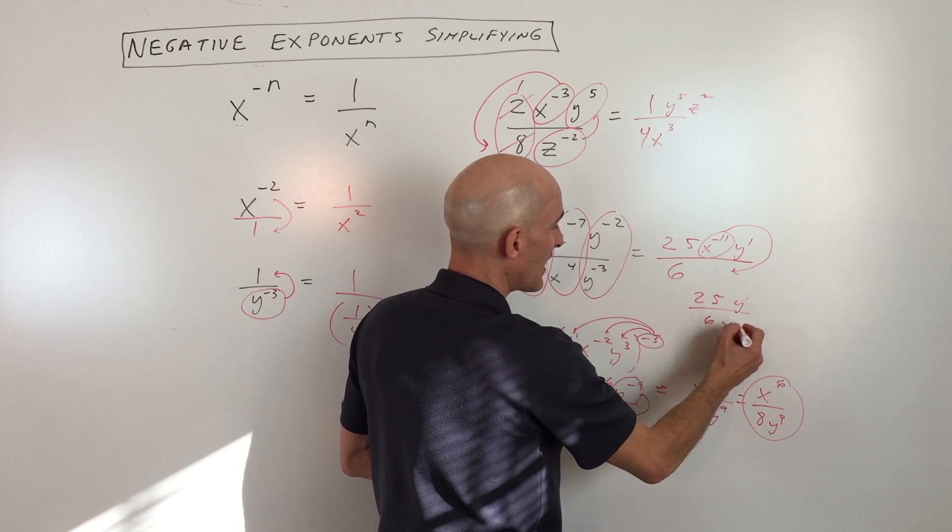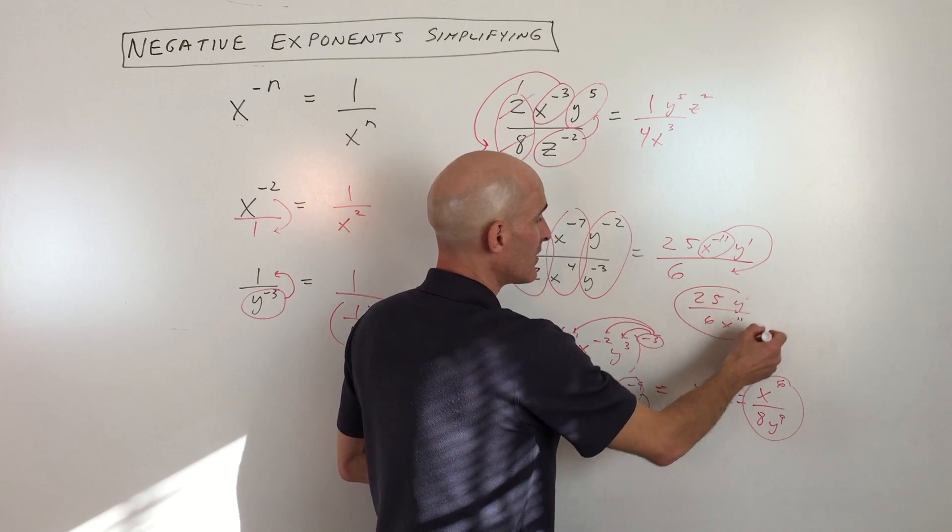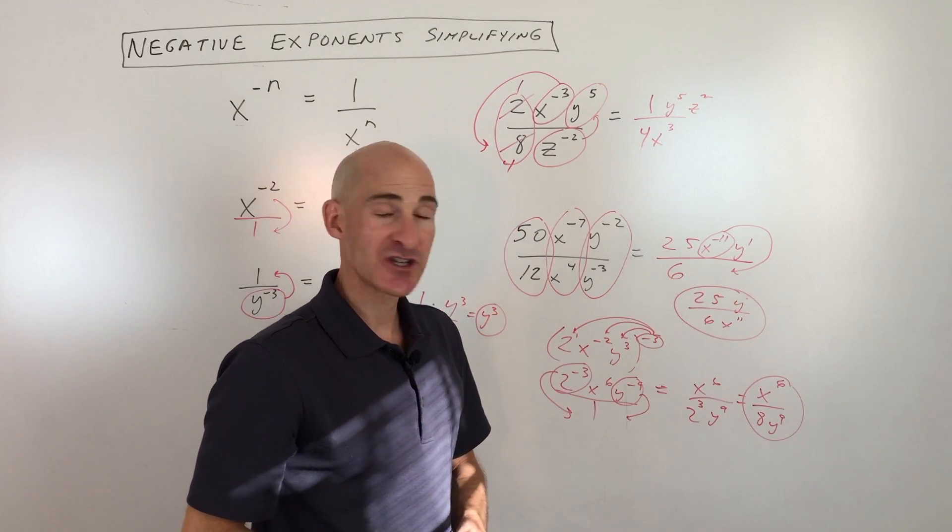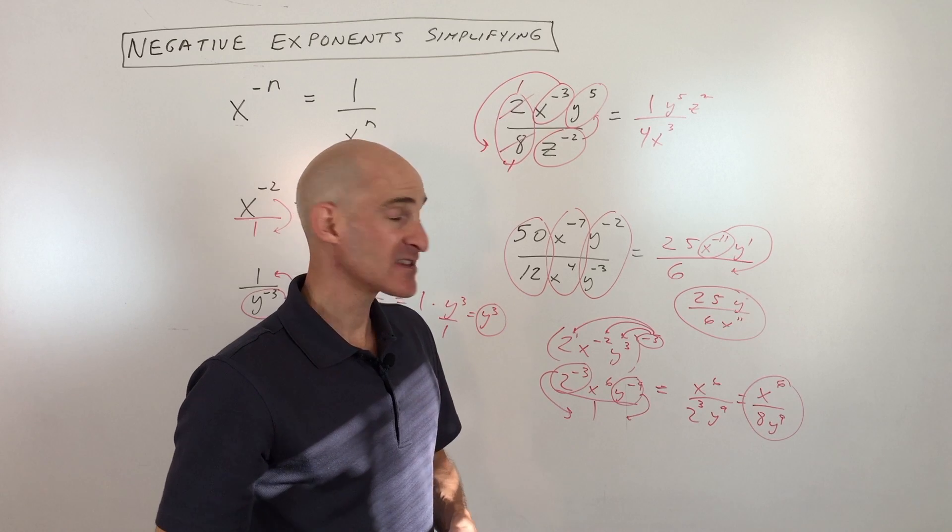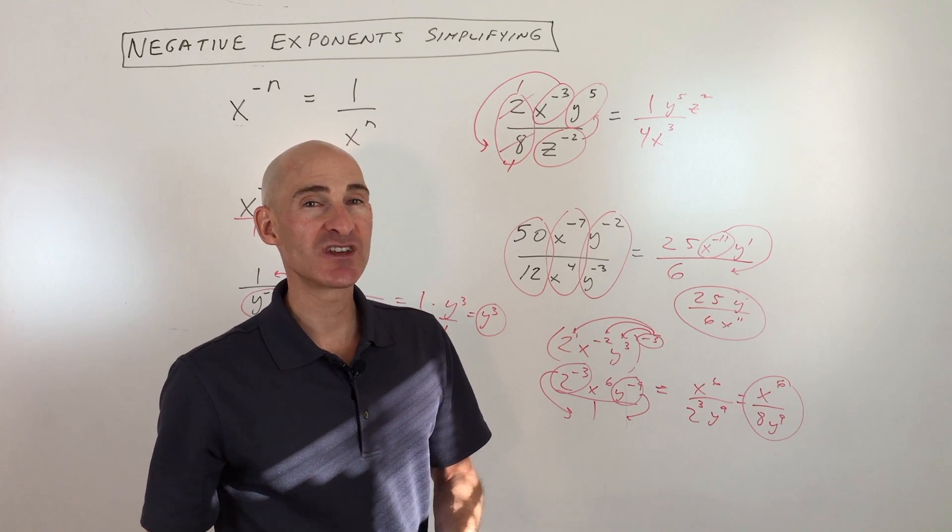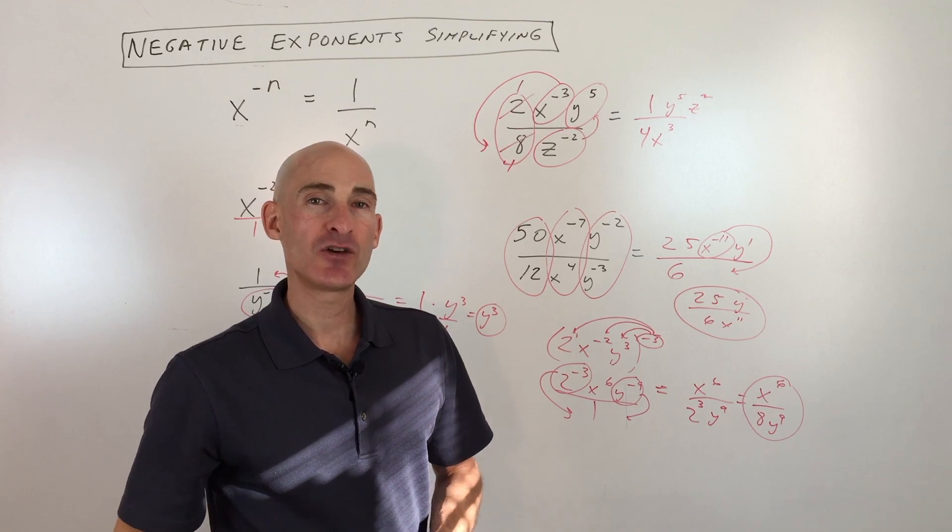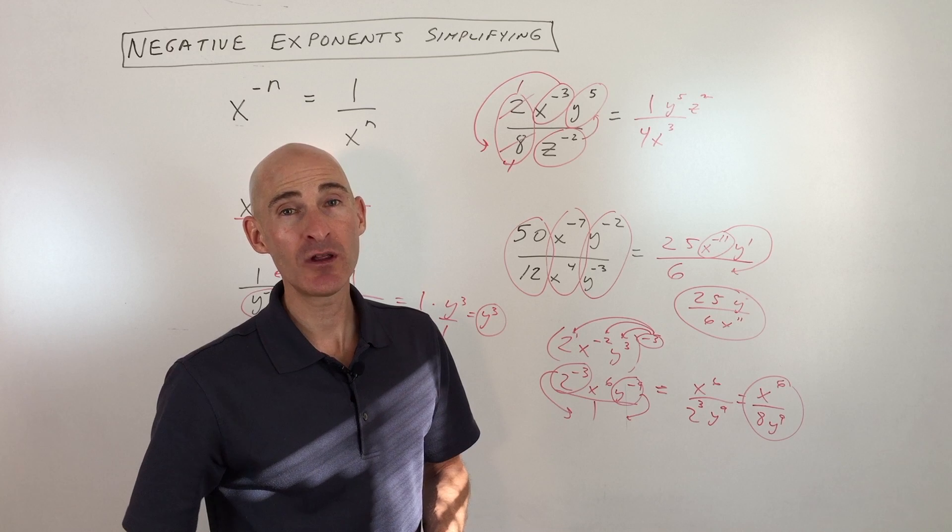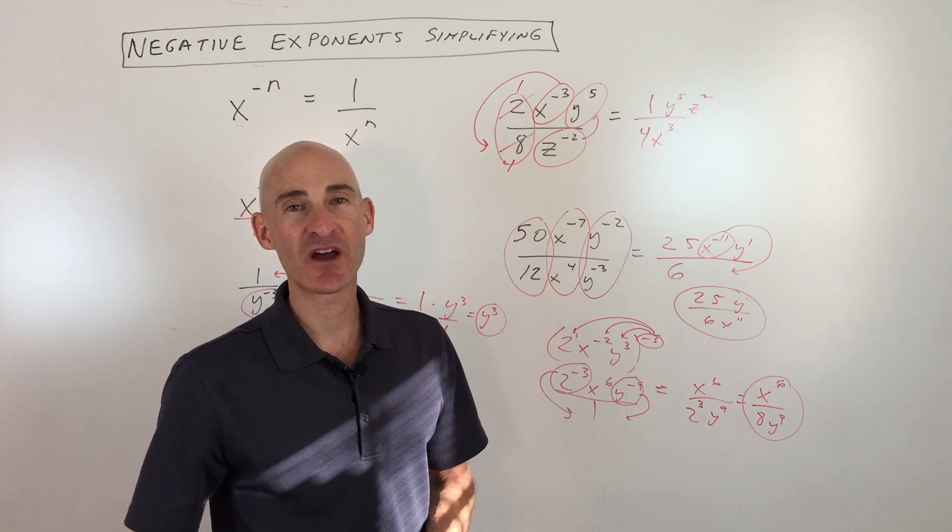So we just have positive exponents. We reduced as much as we could there, and that's it. So I hope this helped you to understand how to work with negative exponents a little bit more efficiently and easily. Subscribe to the channel, check out some more math videos on my channel, Mario's Math Tutoring YouTube channel, and I look forward to seeing you in the future videos. I'll talk to you soon.